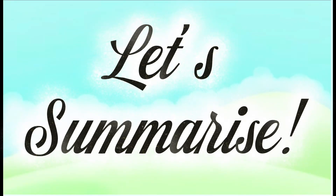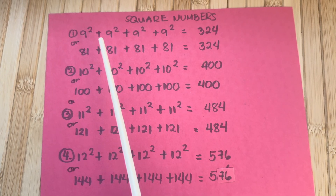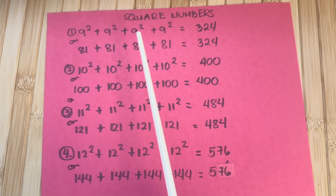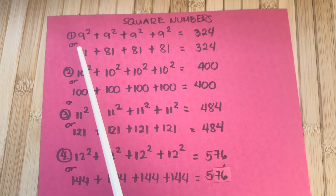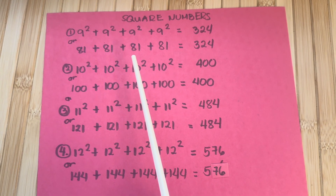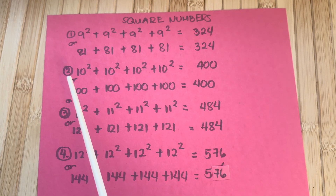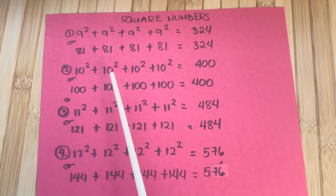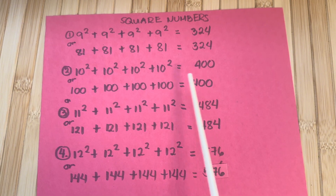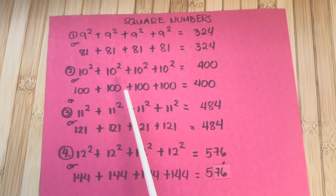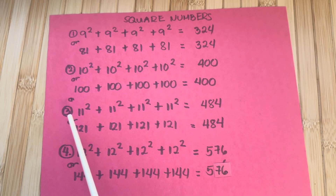Let's summarize! 9 squared plus 9 squared plus 9 squared plus 9 squared is equals to 324, or 81 plus 81 plus 81 plus 81 is equals to 324. Next example: 10 squared plus 10 squared plus 10 squared plus 10 squared is equals to 400, or 100 plus 100 plus 100 plus 100 is equals to 400.